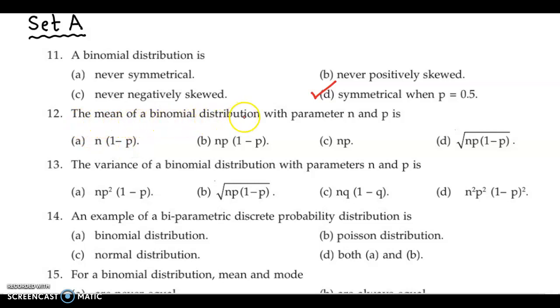Next, the mean of a binomial distribution with parameters n and p. Now we know that mean of binomial distribution is n into p. So the correct answer is option C.